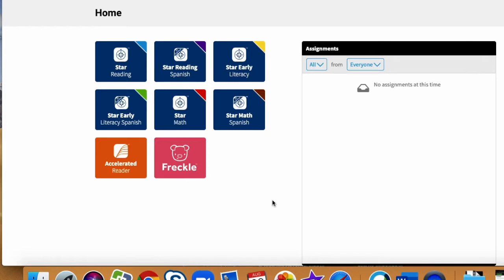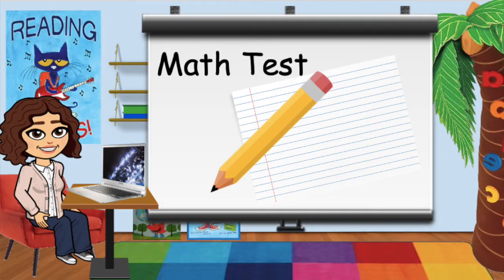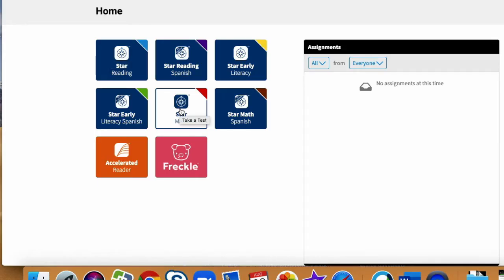This week, we will be taking two tests. First will be the star math with a little red tab in the corner. Next, we will take the star reading with the little blue tab in the corner. Please note, students will need paper and pencil for their math test. There will be computations that they will need to do that will be a little bigger than what they can do in their head. So, it will be very supportive if they have paper and pencil to help.